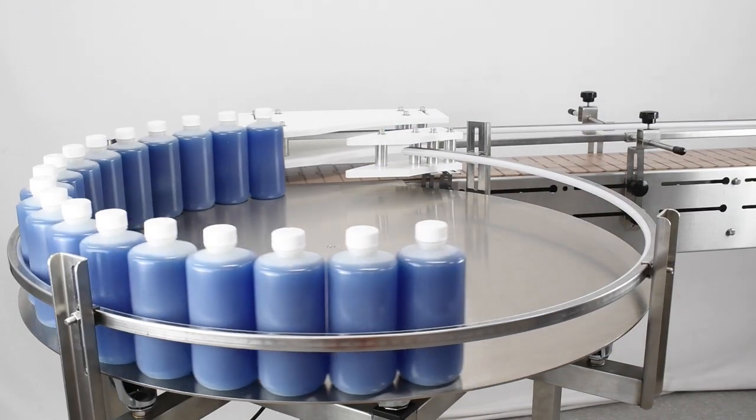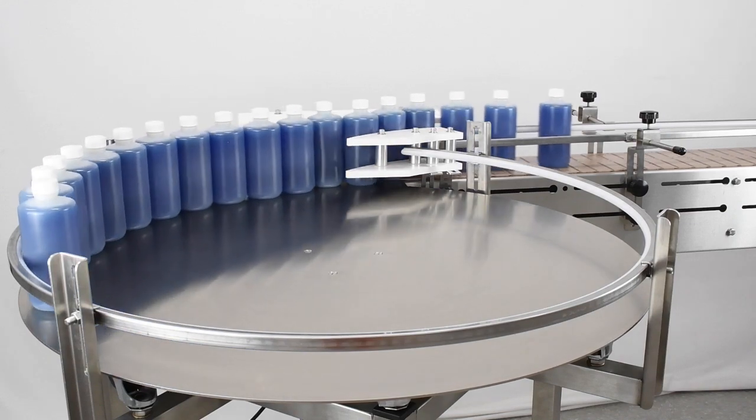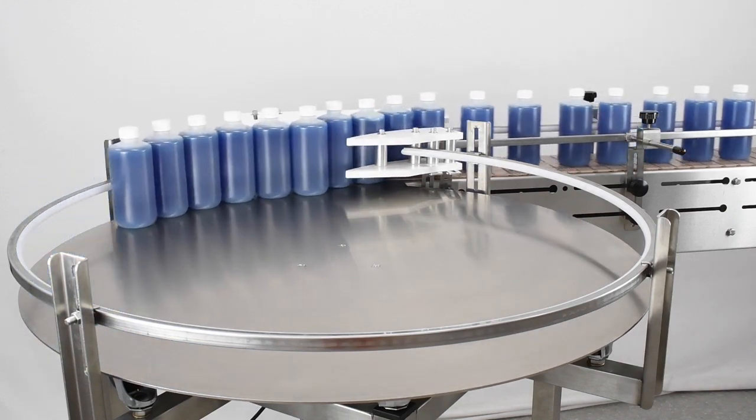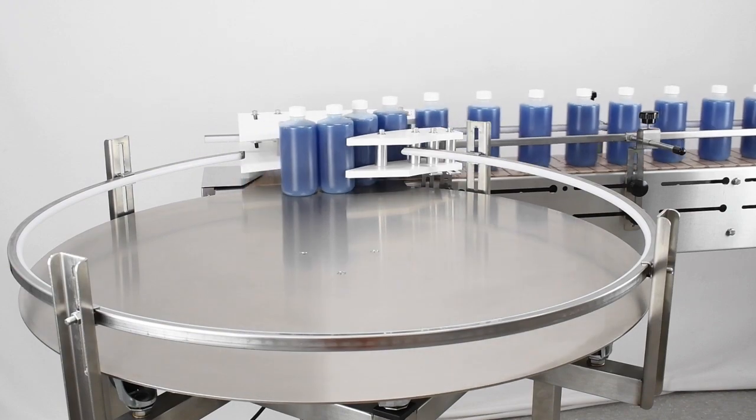Your finished product stream should look something like this. Turn on both your conveyor and accumulation table to see your transfer system in action.